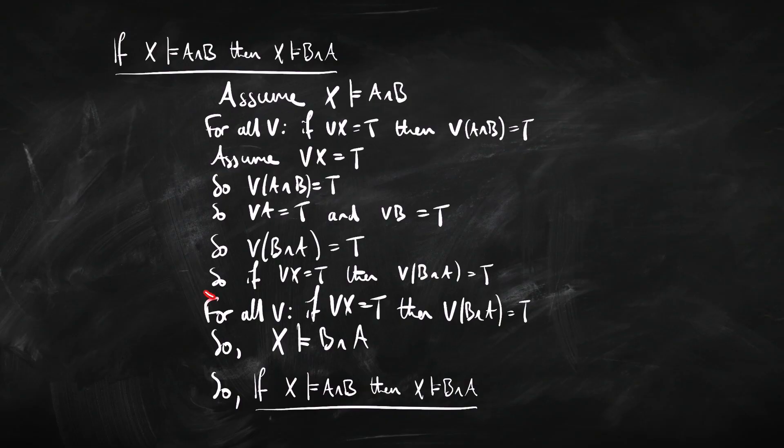So take this example as a template, because it's going to come up again and again. One thing to add: when you look through some metalogic proofs, you won't always see all of these lines written out. Sometimes it's assumed we know what we're doing, so we leave a little bit out. For example, we might not bother writing down the line for our specific valuation, and instead jump straight to 'for all valuations, if then' — combining two steps in one.